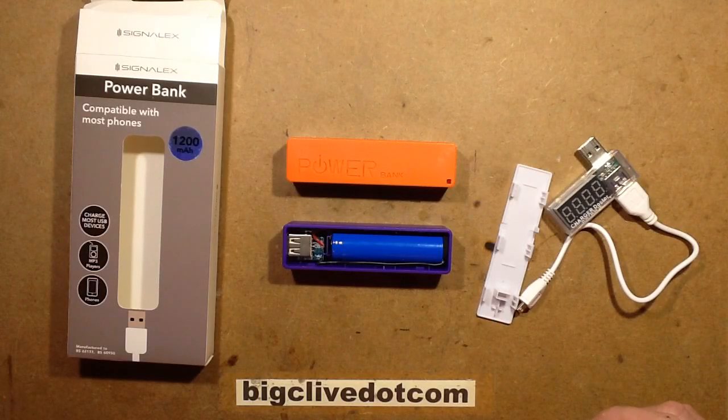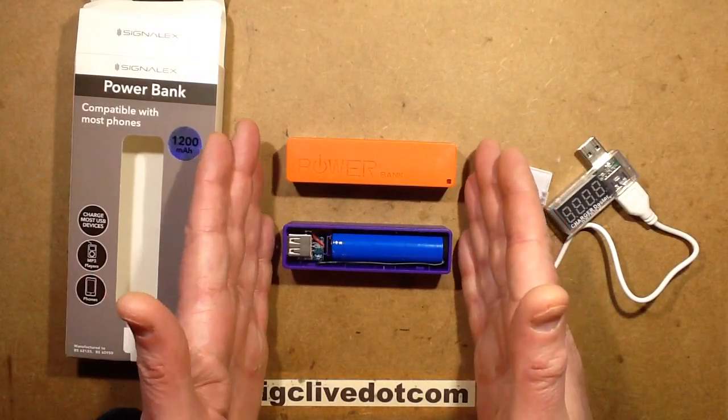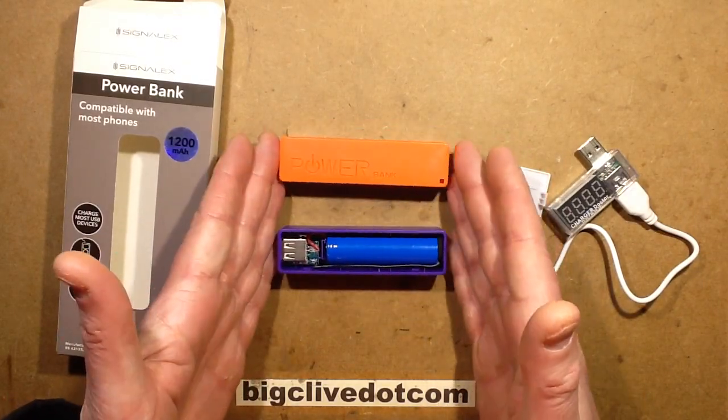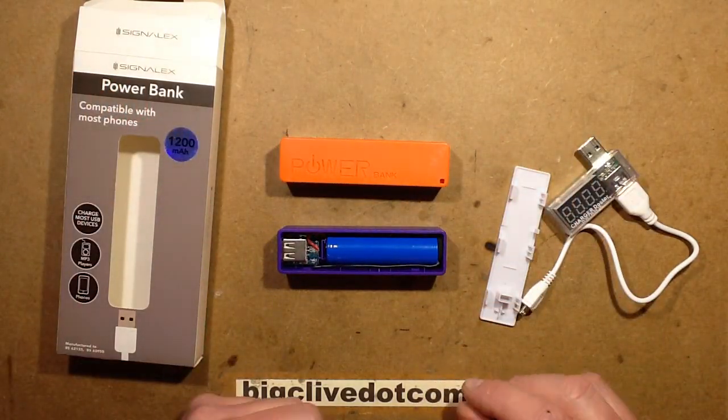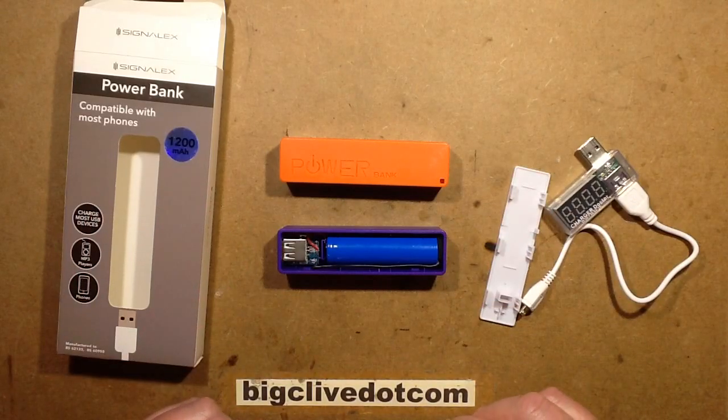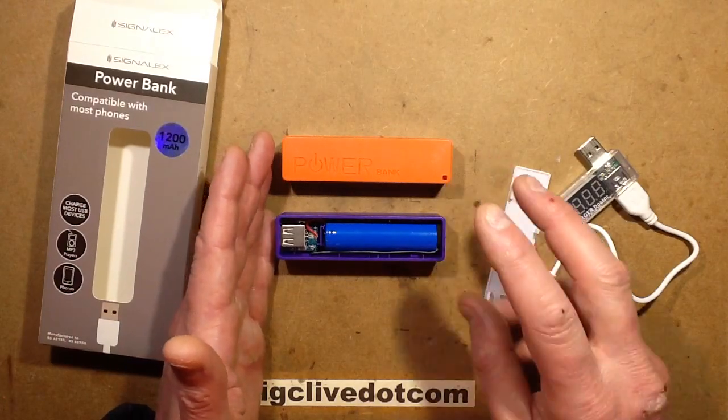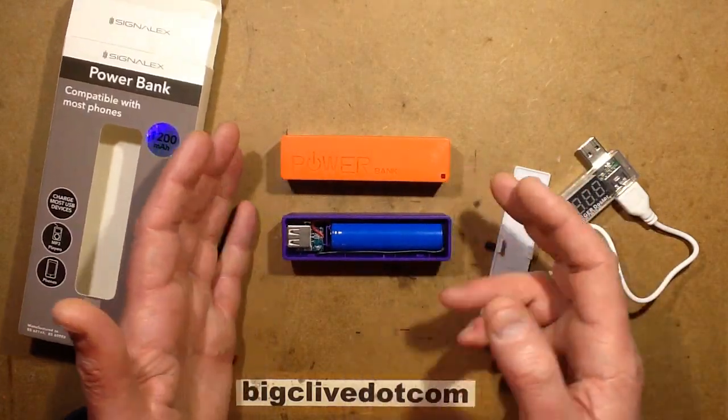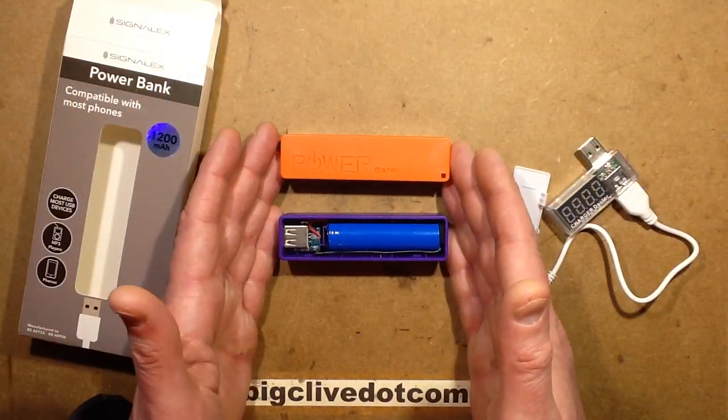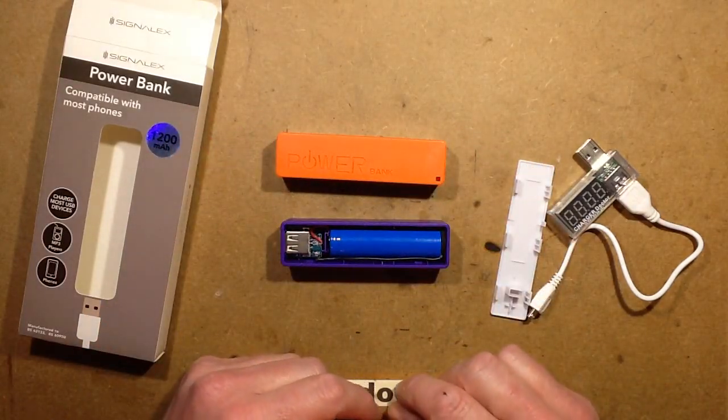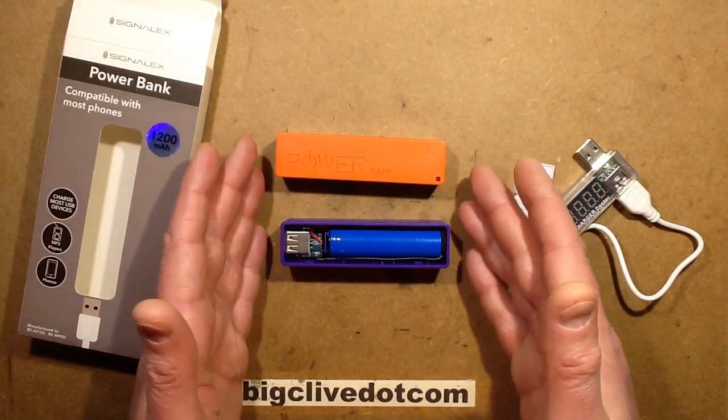I think it's time for a power bank video. Now it's Poundland's turn to introduce a £1 power bank and they're lagging a bit behind Pound World, who had a rocky start with their power banks. The first power banks that Pound World introduced were a bit shady and the latter ones were a lot better. I'm afraid that Poundland has also got off to a rocky start with their first power banks, so I bought two of them.